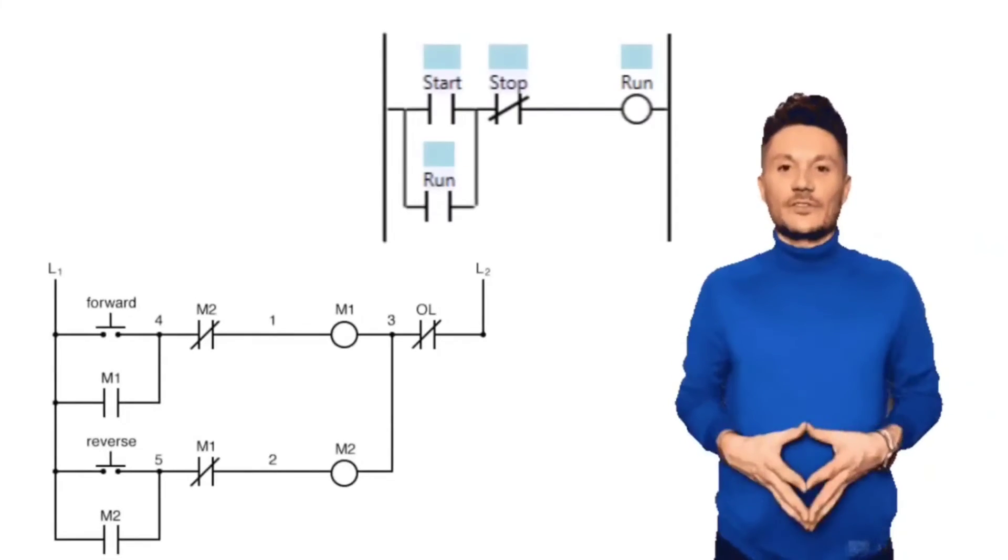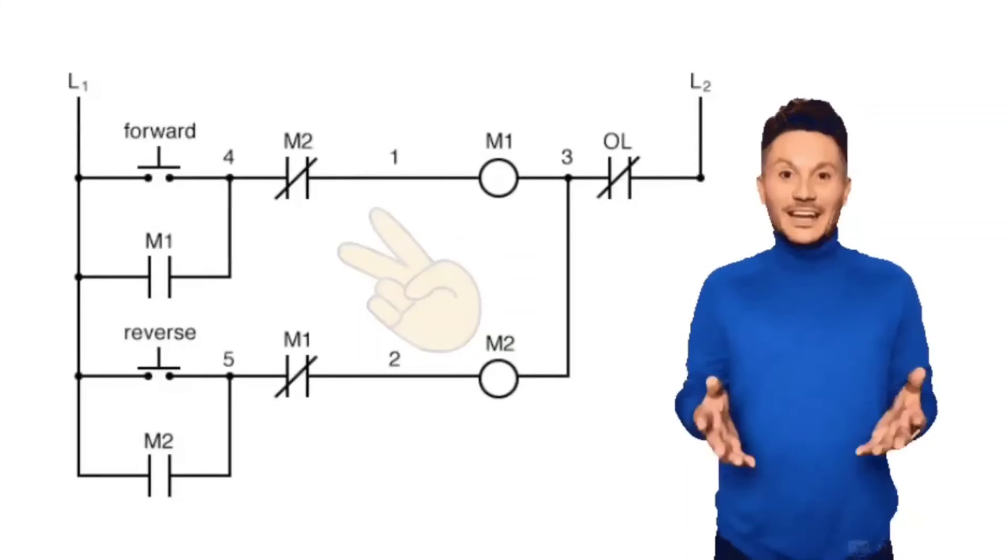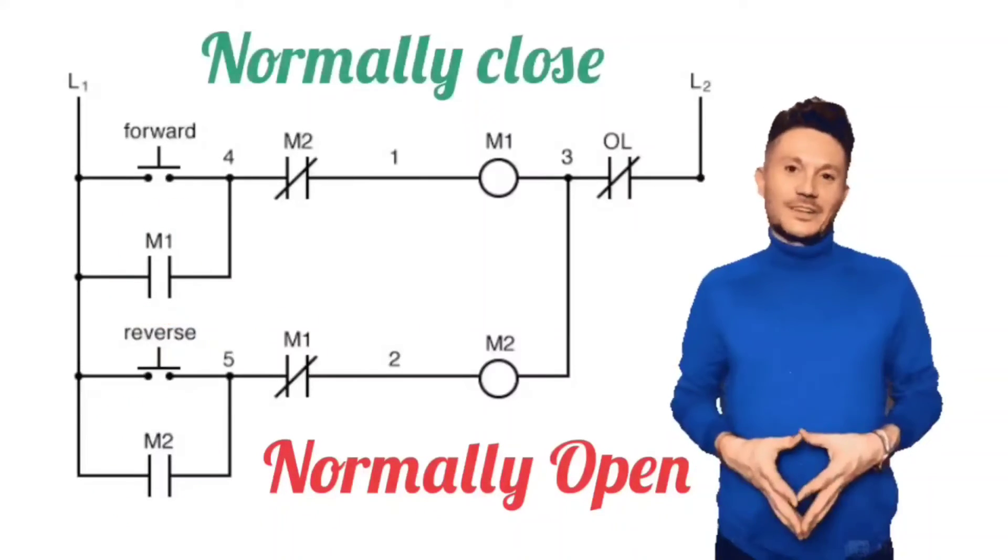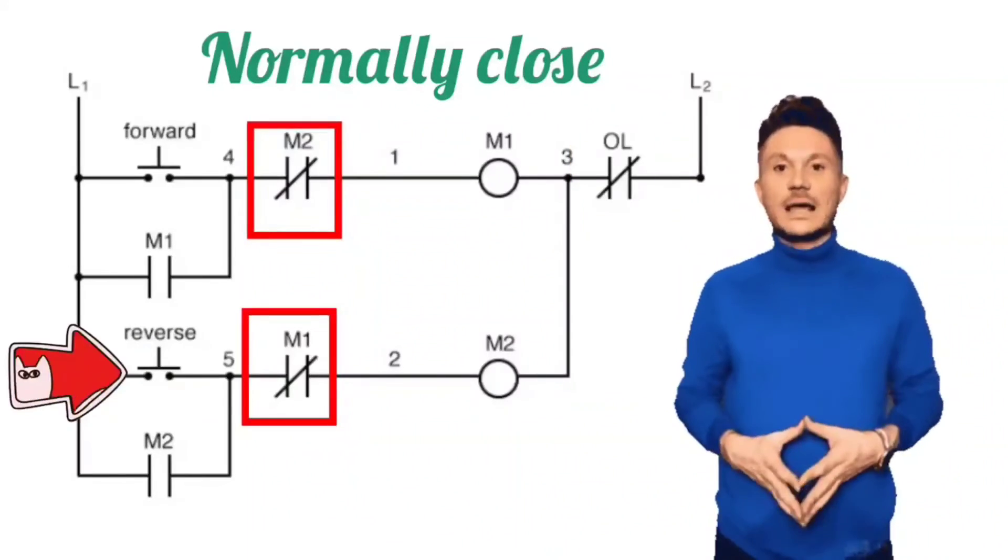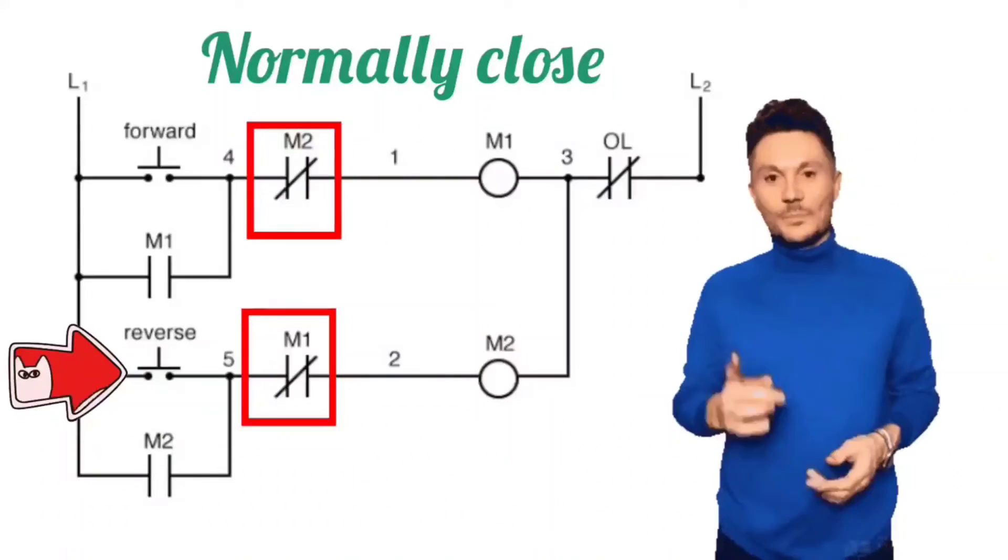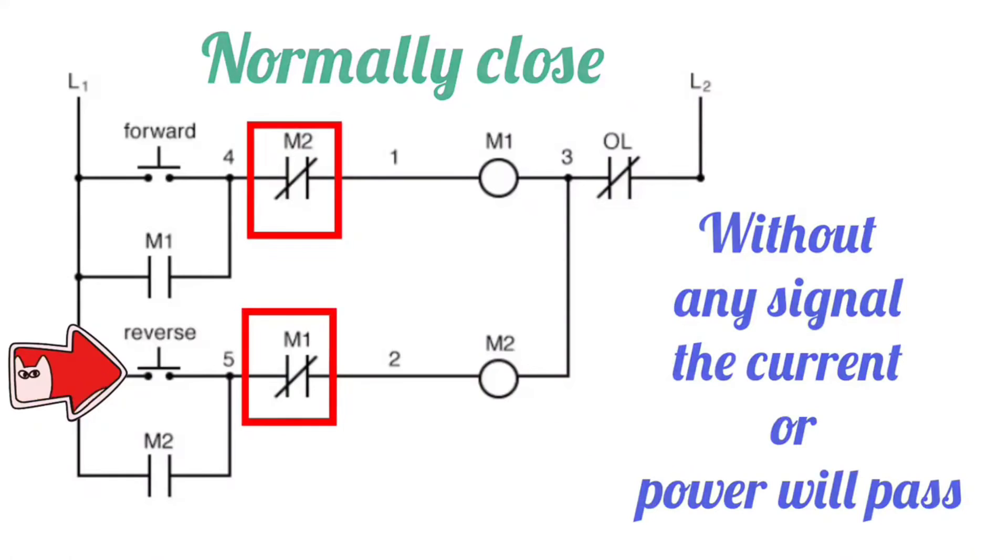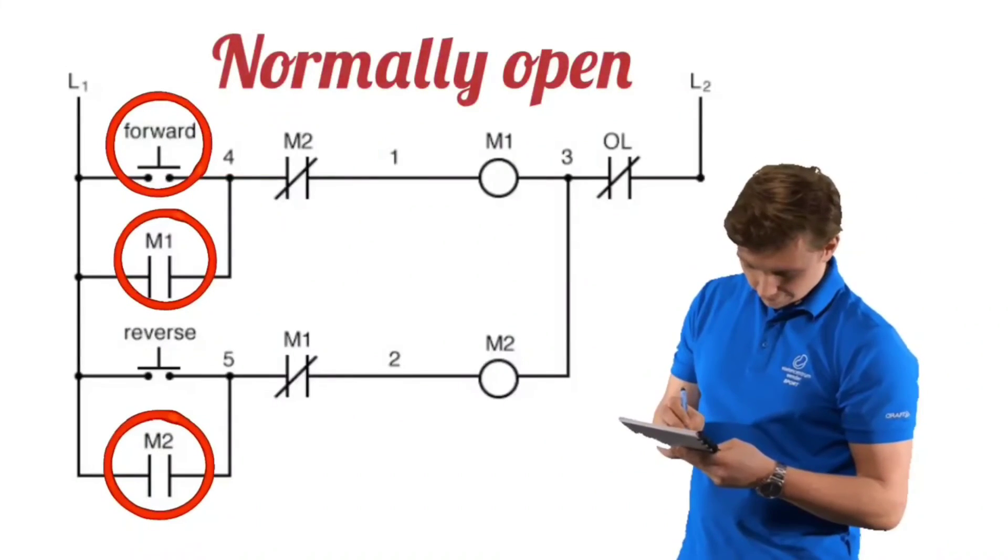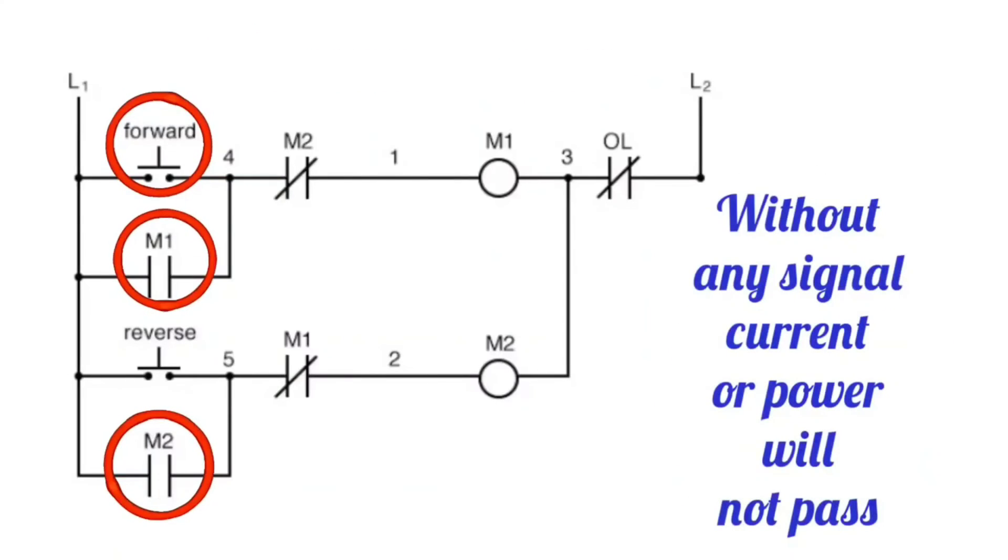This is a ladder logic program for motor control. Here two types of symbols are shown at input side. One is for normally open and one is for normally close. The one on which there is a cut, or which is shown closed, is for normally close. Normally close means that it will pass the current without any signal. And the one which has no cut, or which is shown open, it is for normally open. Normally open means that without any signal, it will not pass the current.